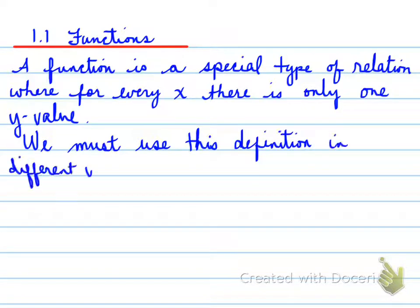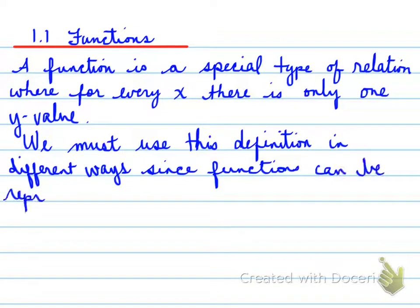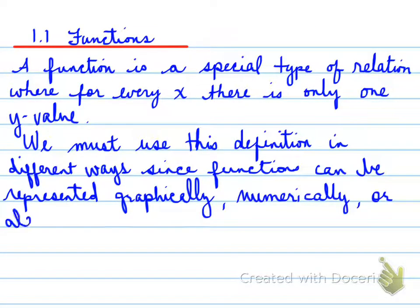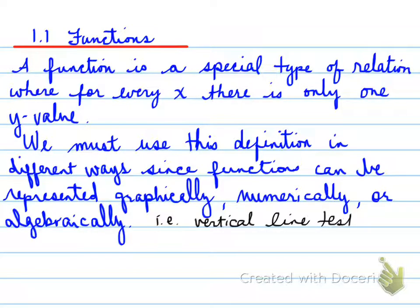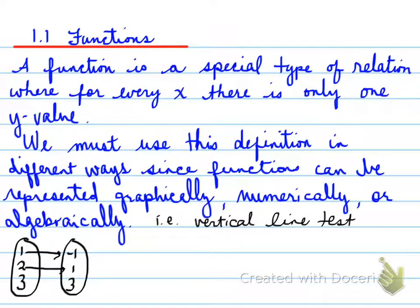We can use this definition and apply it in different ways. Since functions can be represented graphically, numerically, or algebraically, examples can be as follows. We use a vertical line test to define how graphically we can determine if it's a function or not. Let's look at an example — this is called a mapping diagram. This mapping diagram here represents a function.